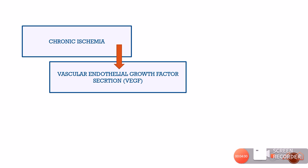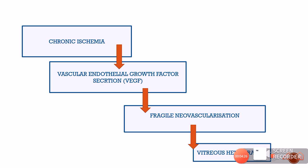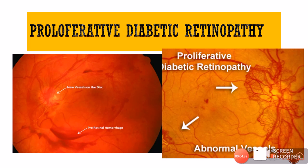In conditions like proliferative diabetic retinopathy, chronic retinal ischemia stimulates vascular endothelial growth factor, VEGF, causing the RPE to secrete more VEGF. This leads to neovascularization — new vessels that are quite fragile and can bleed at any time, resulting in vitreous hemorrhage. The image shown here demonstrates proliferative diabetic retinopathy with new vessels that do not follow any pattern, are very fragile, and a pre-retinal hemorrhage is also visible on the disc.